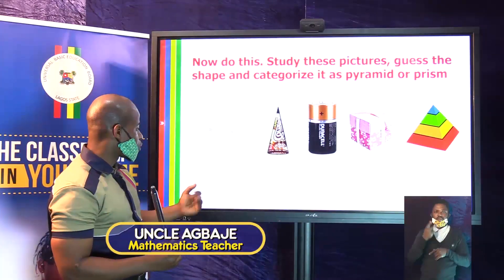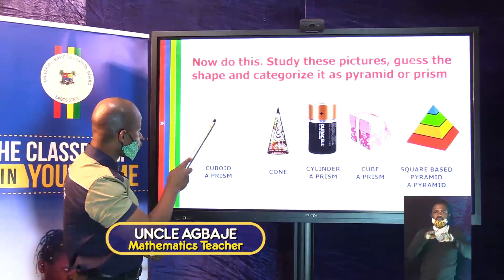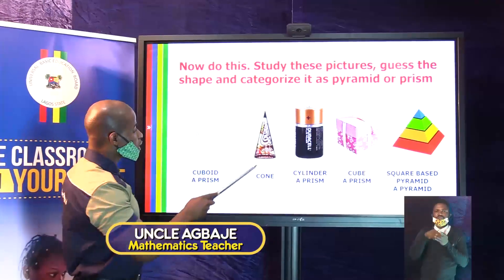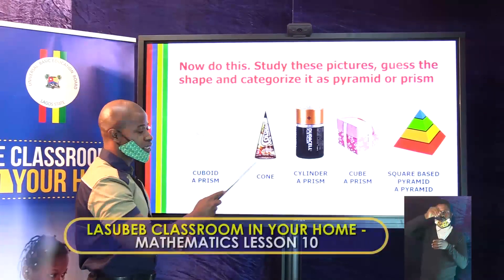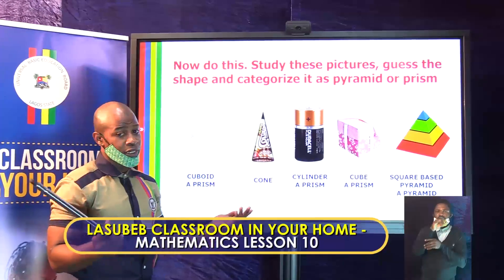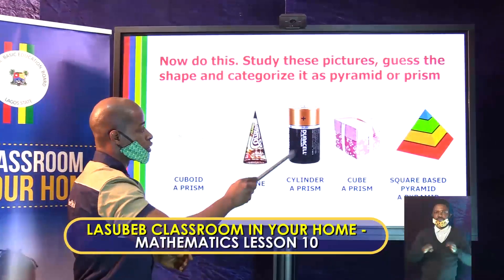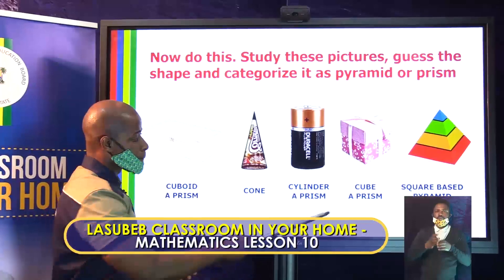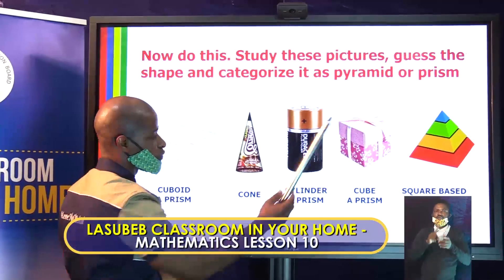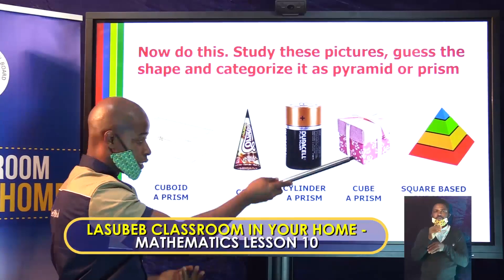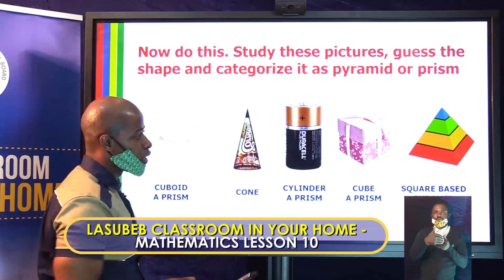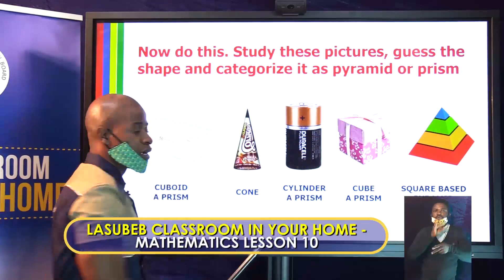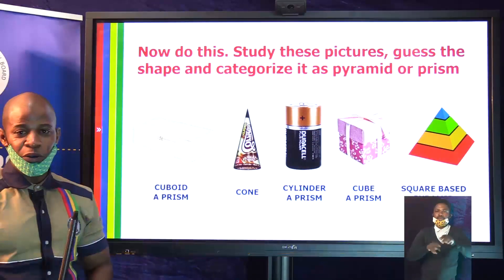I believe you have done this. Let's now look at the correct answers. This one has a flat top so it's a prism — in fact a cuboid or rectangular prism. This one is a cone because the base is a circle; it is not a pyramid and not a prism. This one has flat top and flat bottom — it's a prism in the shape of a cylinder. This one with flat top and flat bottom is a prism — a cube in fact, because all the edges and faces are equal. And that last one is a pyramid — in fact, a square-based pyramid.